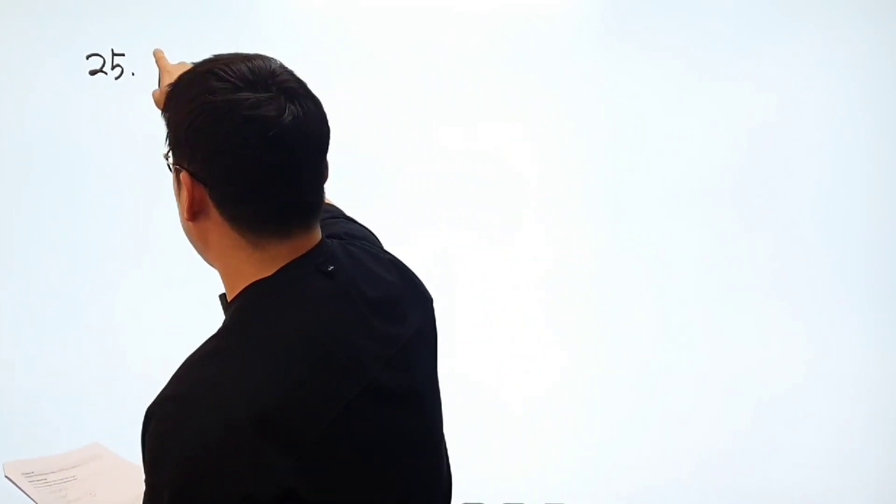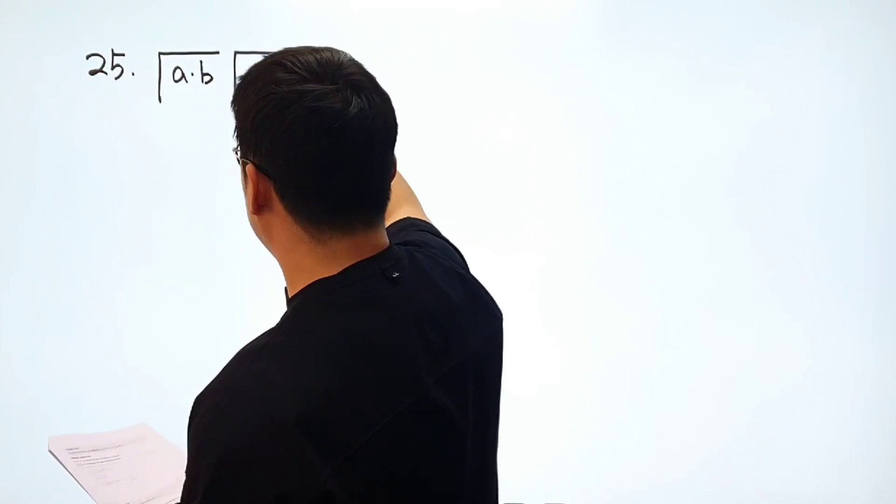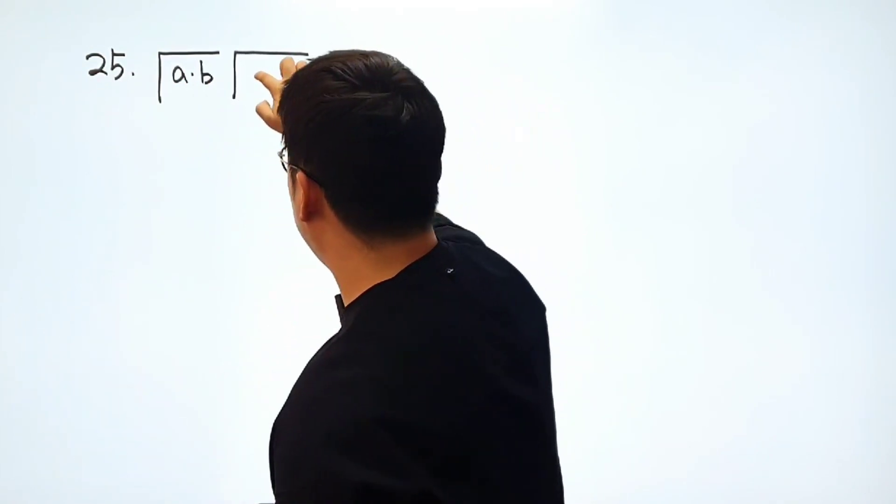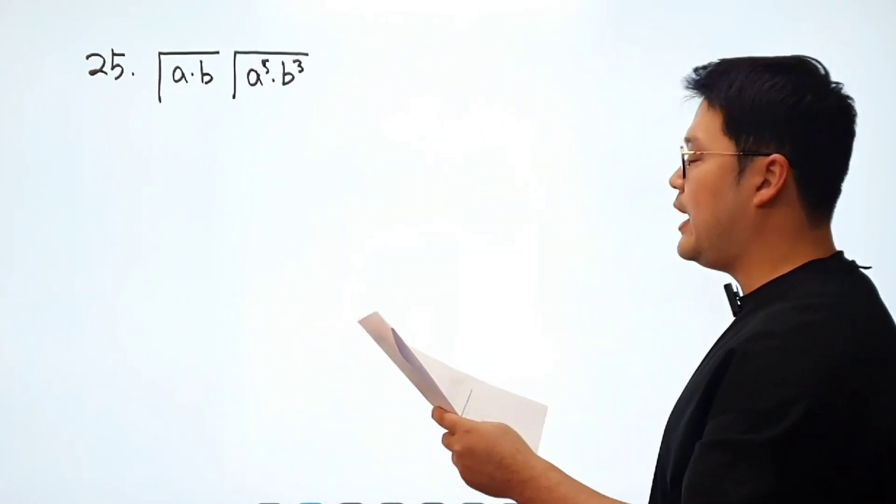So we have root AB, root A times B, and I got square root of A to the power of 5. And I would say I got B to the power of 3. Okay.